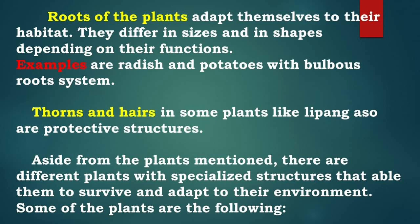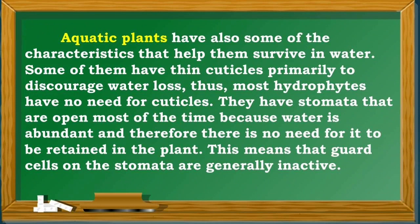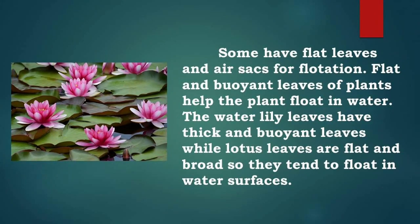Aside from the plants mentioned, there are different plants with specialist structures that enable them to survive and adapt to their environment. Aquatic plants have characteristics that help them survive in water. Some have thin cuticles primarily to discourage water loss, though most hydrophytes have no need for cuticles. They have stomata that are open most of the time because water is abundant, meaning guard cells on the stomata are generally inactive. Some have flat leaves and air sacs for flotation. The water lily has thick and buoyant leaves, while lotus leaves are flat and broad, so they tend to float on water surfaces.